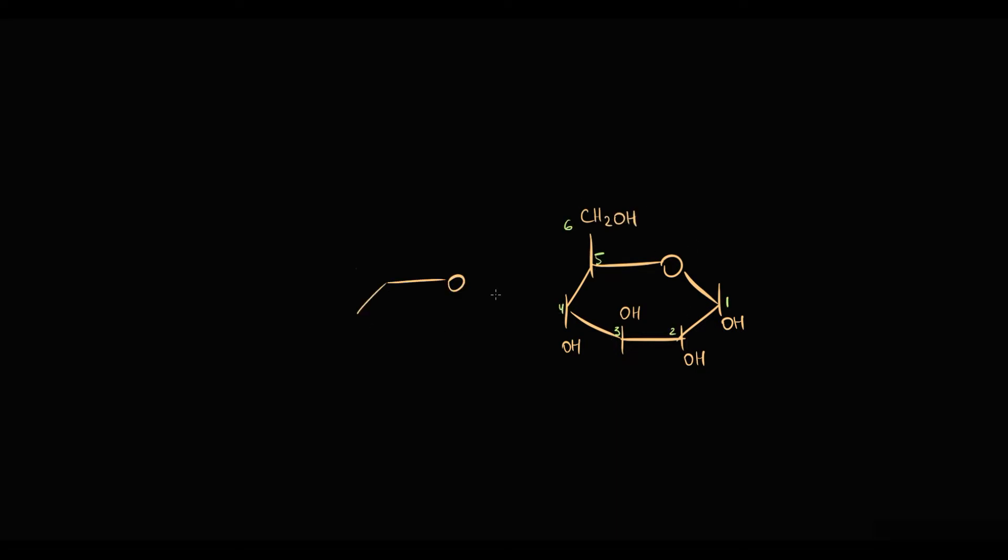And there is the second glucose molecule. Most of glucose molecules in the glycogen structure are connected with each other by the first and the fourth carbons. And because this bond is created between the first and the fourth carbons, this bond is called alpha-1,4-glycosidic bond.